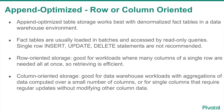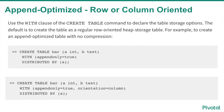Column-oriented storage is really good for data warehouse workloads with aggregations of data computed over a small number of columns, or for single columns that require regular updates without modifying the other column data. To create an append-optimized table, either row- or column-oriented, use the create table syntax. Add the with clause and set append-only equal to true to create an append-optimized row-oriented table. If you want the table column-oriented, add orientation equal column to the table definition.